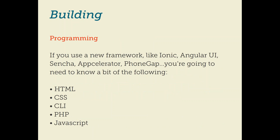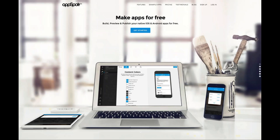Frameworks other than Ionic — like Angular, Sencha, AppCelerator, and PhoneGap — you're going to need to know some HTML, CSS, some command line interface, PHP, and JavaScript in order to make your apps. But the benefit is that it's not Swift, it's not Objective-C — it's not some very complicated language for the non-initiated. HTML and CSS are fairly easy to pick up if you put some time into it. PhoneGap is now an Adobe product — I would definitely recommend it, but know that you will have to buy a Creative Cloud account in order to enable PhoneGap applications, especially if you want to run them through a simulator.